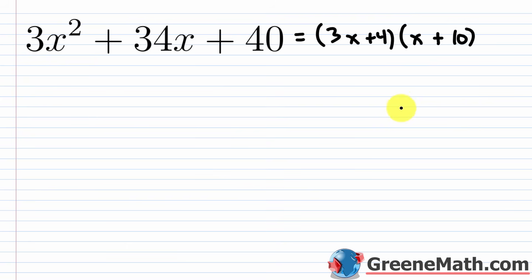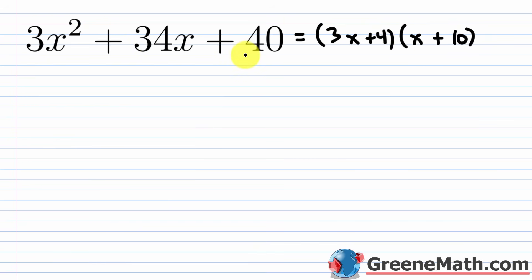Check with FOIL: 3x · x = 3x² ✓; outer 30x plus inner 4x = 34x ✓; last 4 · 10 = 40 ✓. So the factorization (3x + 4)(x + 10) is confirmed.